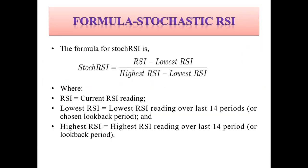Here is the formula for Stochastic RSI if you'd like to calculate it yourself and understand how the indicator works, so you can develop your strategy around it. Stochastic RSI is calculated as: (Current RSI − Lowest RSI) ÷ (Highest RSI − Lowest RSI). This is how you calculate the Stochastic RSI values.